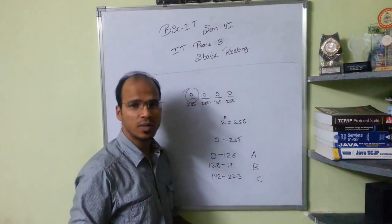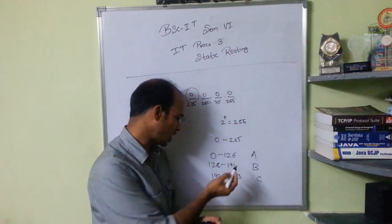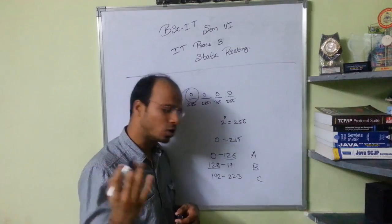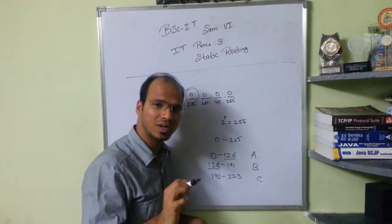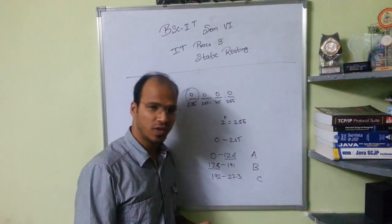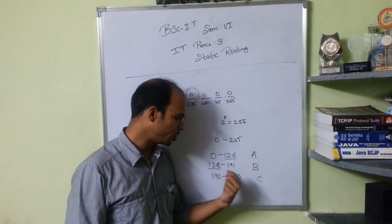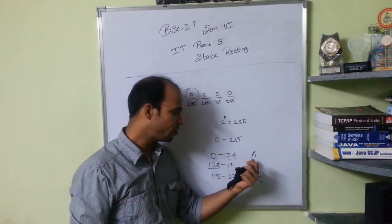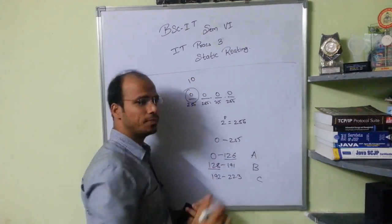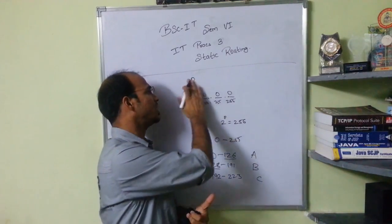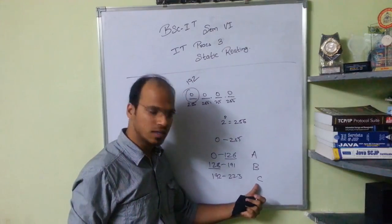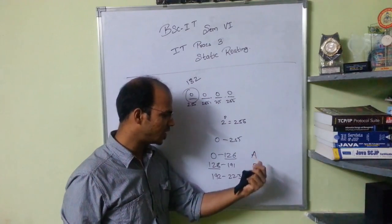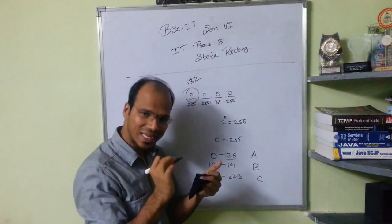You might wonder where 127 is, since I said 126 and then 128. The address 127 is a loopback address — it falls under Class A but you cannot directly use it. So we use 0 to 126 for Class A, 128 to 191 for Class B, and 192 to 223 for Class C. It all depends on the first octet — if your first octet is 10, it's Class A; if it's 192, it's Class C; if it's 182, it's Class B.